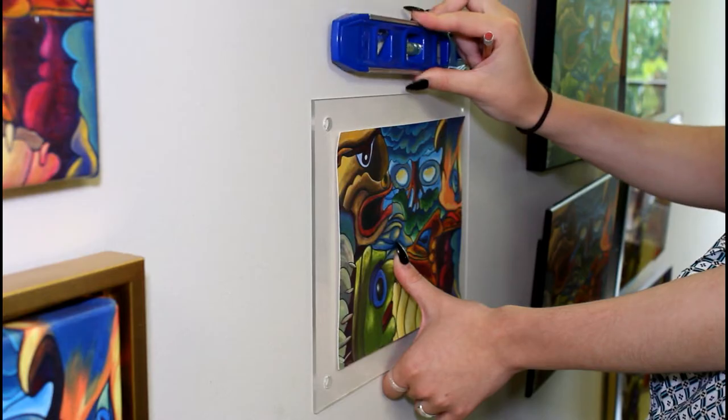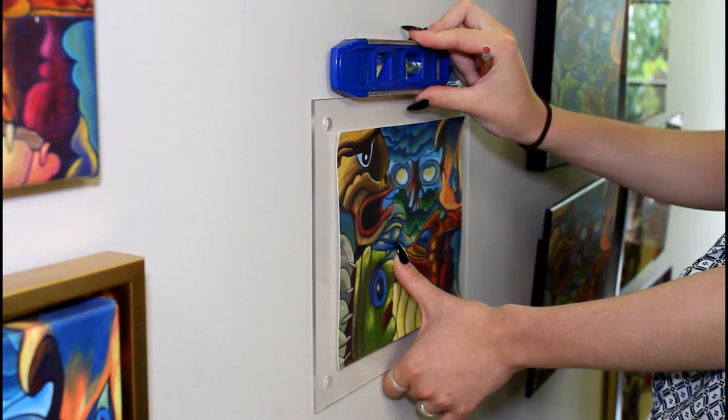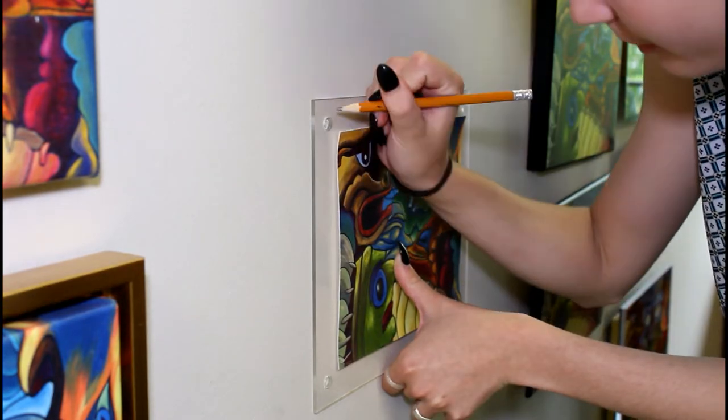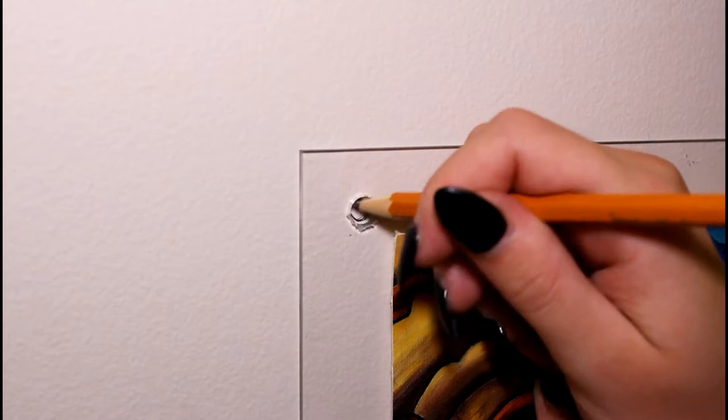Step 2. Place the frame on the wall and mark four holes using a pencil. Use a spirit level to make sure the frame is placed accordingly and mounted straight.